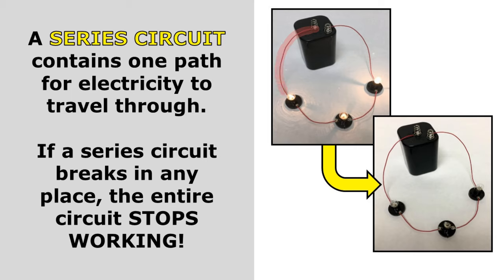A series circuit contains one path for electricity to travel through. If a series circuit breaks in any place, the entire circuit stops working. In this bottom picture, the middle bulb is broken and that creates a small gap in the circuit. Now electricity cannot get from one side of the battery through the entire circuit and back to the other side because there's a gap. So all of the light bulbs have stopped working.